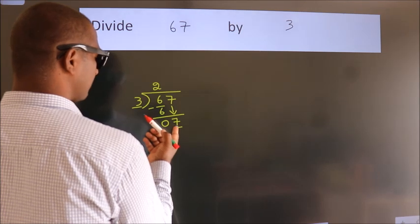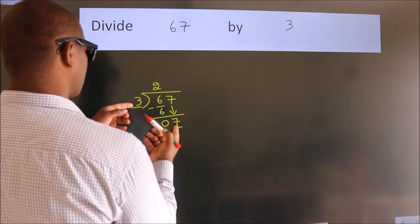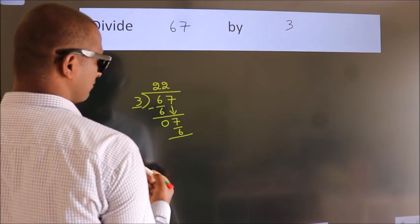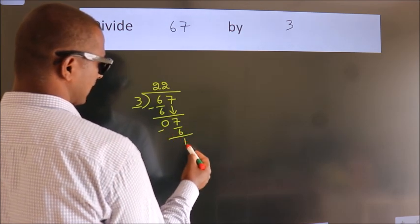A number close to 7 in 3 table is 3 2s, 6. Now, we subtract, we get 1.